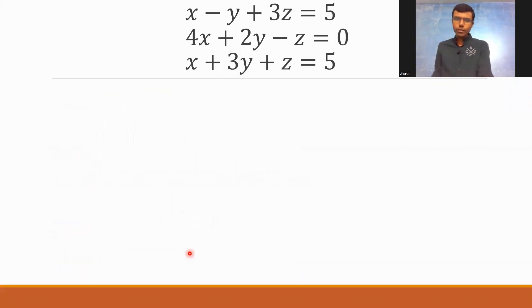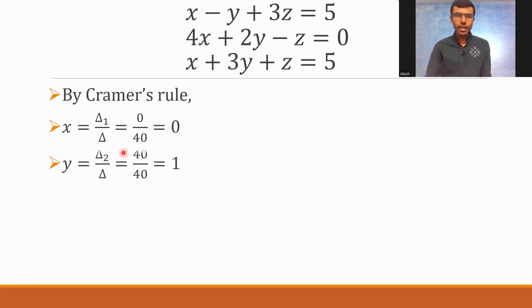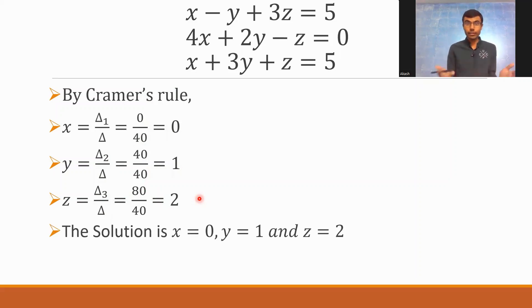Now, yes. Now, after you're done with all this. By Kramer's rule, by Kramer's rule, x is nothing but delta 1 by delta. Our delta 1 was 0, and delta was 40. So, 0 by 40 is nothing but 0. Fine. Now, next. Y is nothing but delta 2 by delta, which is nothing but 40 by 40, which is equal to 1. Next. Z is nothing but delta 3 by delta, which is nothing but 80 by 40, which is nothing but equal to 2. Therefore, the solution is x equal to 0, y equal to 1, and z equal to 2.